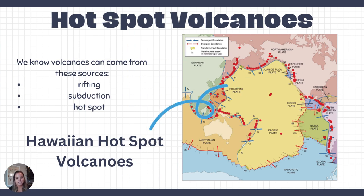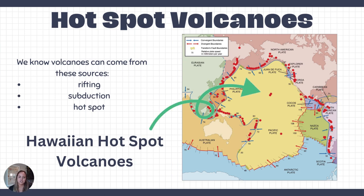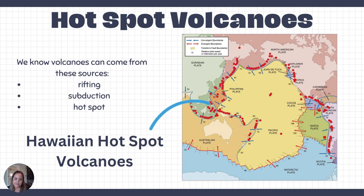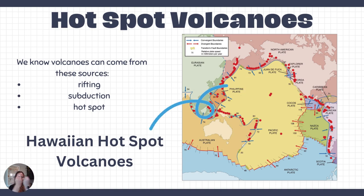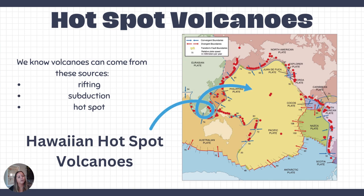Looking specifically at the Pacific Plate, we see a lot of seismic activity around the border, but also some volcanic activity in the middle of the plate. If volcanoes are caused by plates pulling apart or by subduction, what are the ones in the center of the plate doing? We call those hotspots — specifically the Hawaiian hotspots.